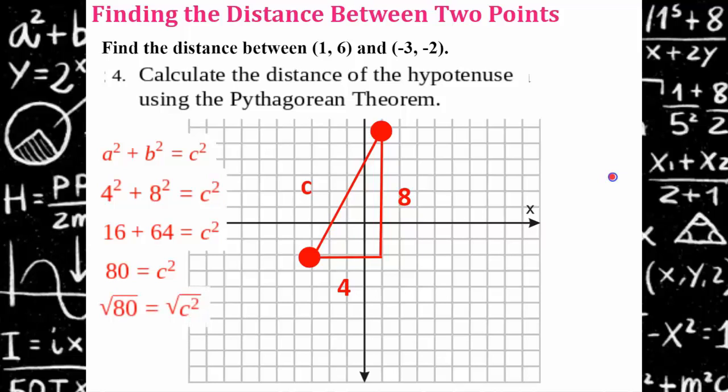Take the square root of both sides and see my hypotenuse is equal to 8.9 units. Traditionally, you're going to round to the nearest tenth unless the instructions tell you to do something else.